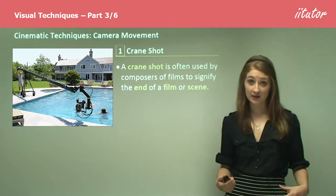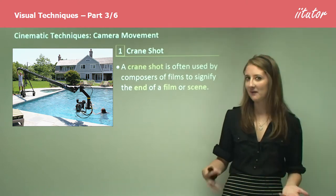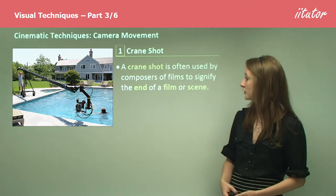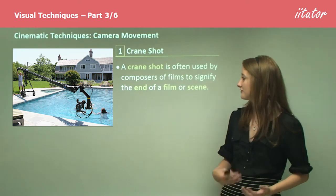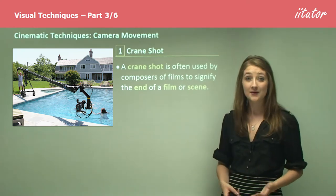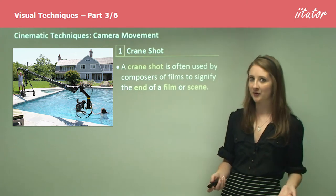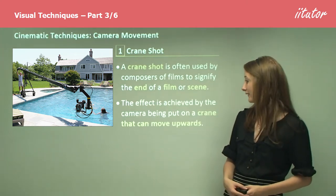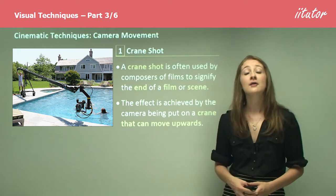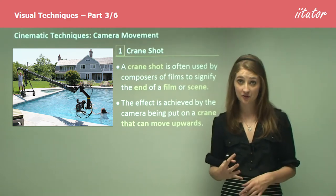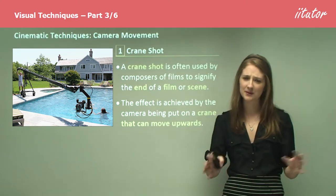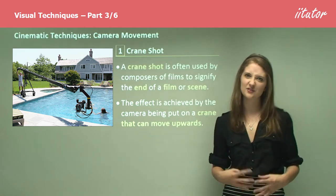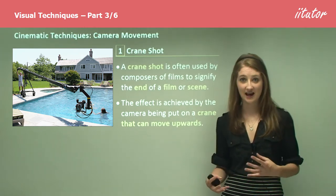Firstly, we get the crane shot. As the name suggests, the crane shot is often used by composers of films to signify the end of a film or a scene by literally putting the camera on a crane. This effect is achieved by the camera being placed on a crane that can move upwards or downwards, allowing movement and seeing different things as it moves.